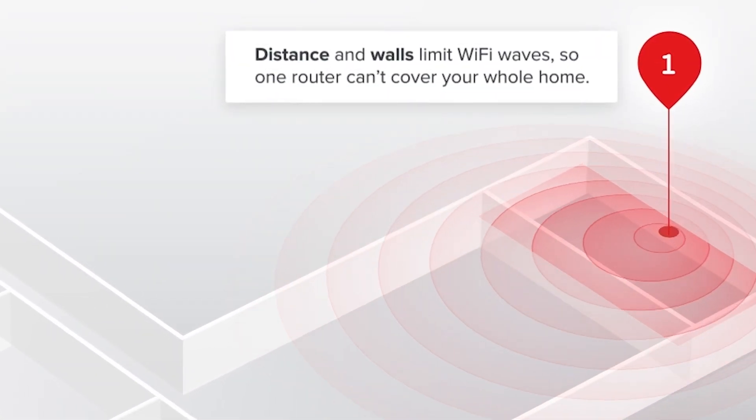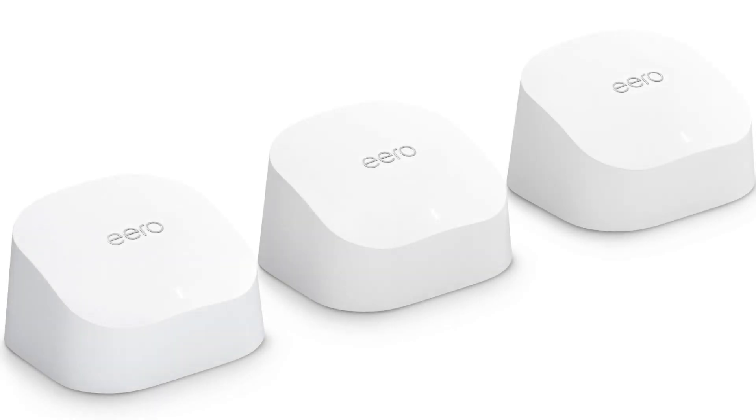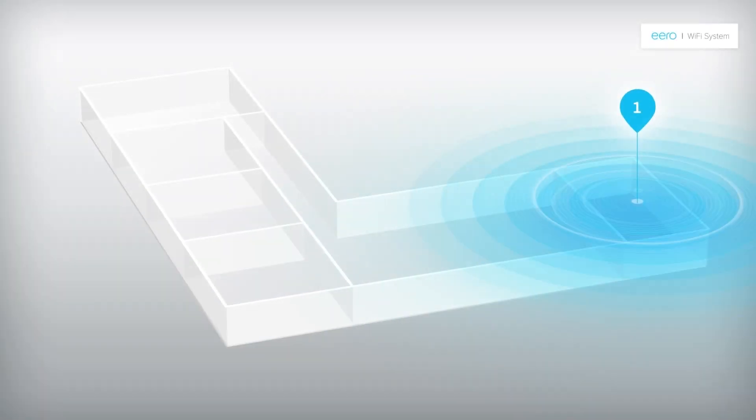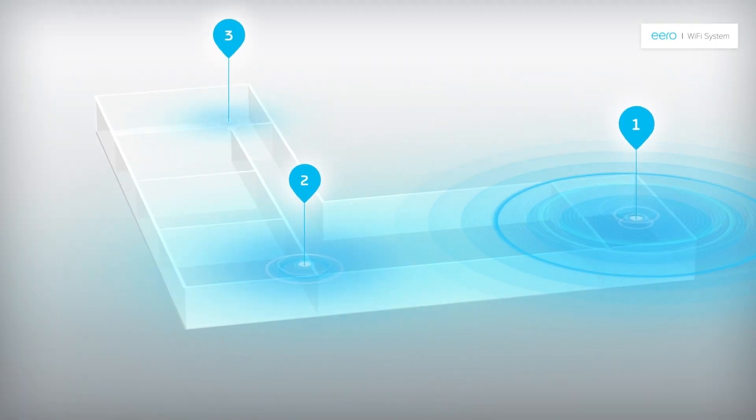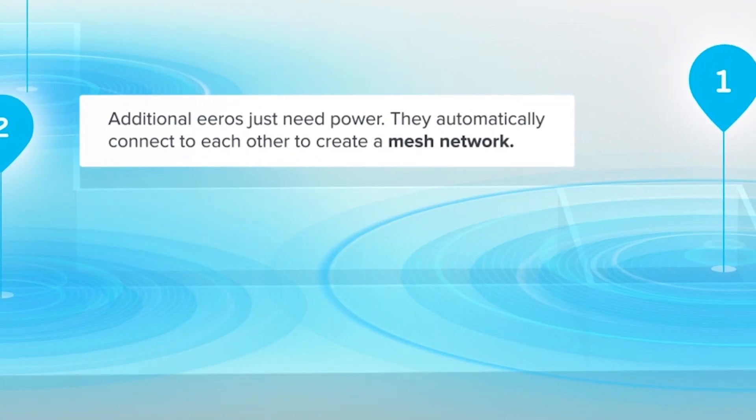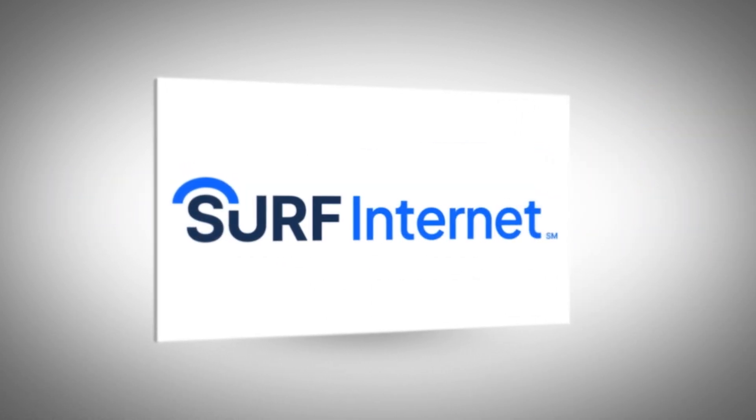Surf Internet solved that with mesh technology. Think of it as installing multiple high-speed sprinklers, better covering your home without sacrificing as much speed and without all the wires. We are Surf Internet and we're making broadband better, easier, and more convenient for you.